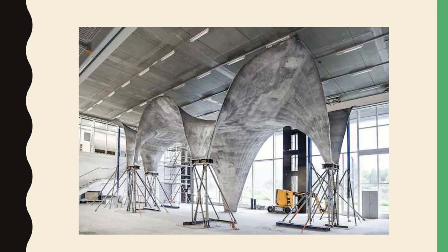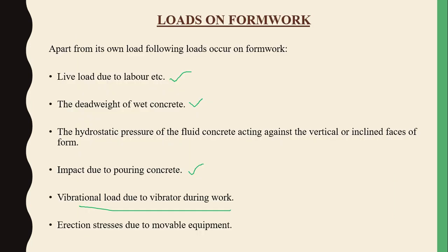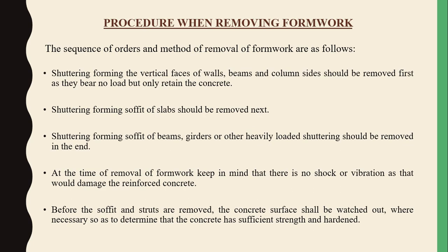After concrete is poured and set, we proceed to remove the formwork — called de-shuttering or stripping — following a particular order. First, shuttering forming the vertical surfaces of walls, beams, and column sides should be removed first, as they bear no load. Remove the vertical faces of the structure first — especially for beams, columns, and walls — not the top and bottom.